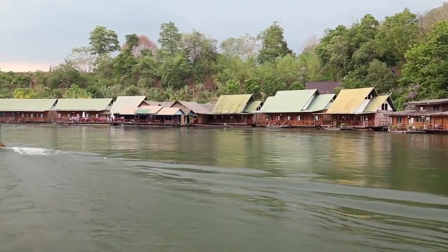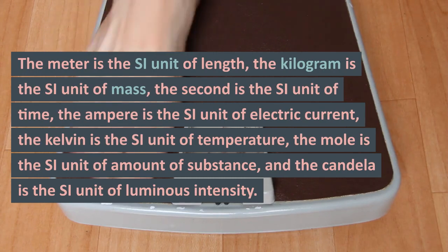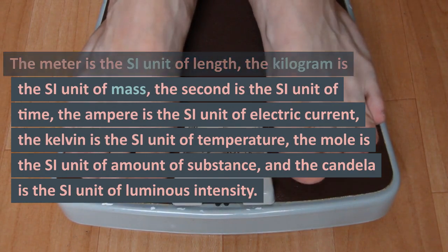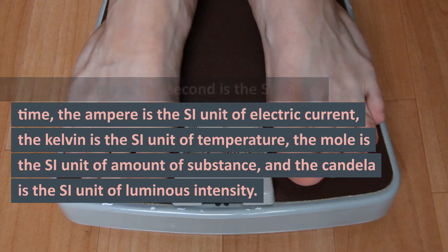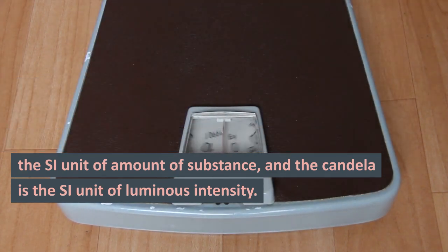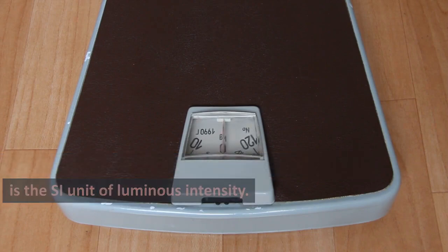Fundamental Units of SI. The meter is the SI unit of length, the kilogram is the SI unit of mass, the second is the SI unit of time, the ampere is the SI unit of electric current, the kelvin is the SI unit of temperature, the mole is the SI unit of amount of substance, and the candela is the SI unit of luminous intensity.